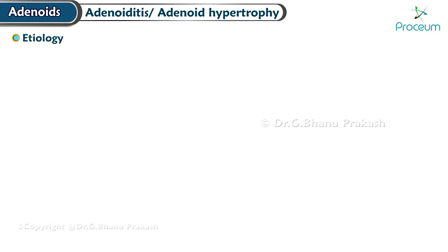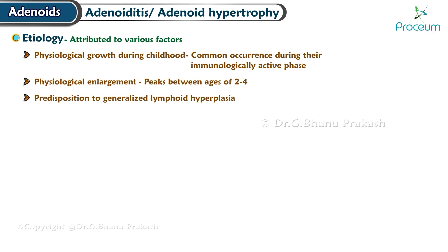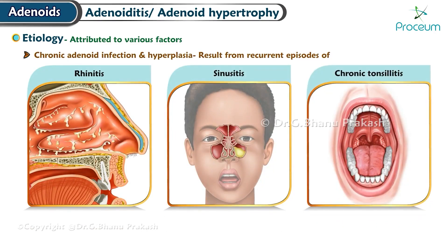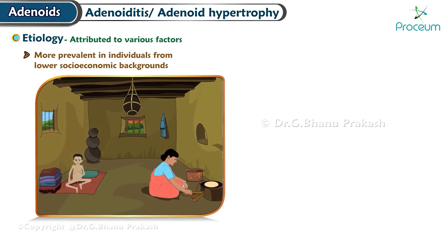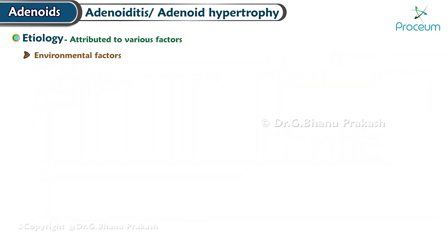Etiology: the etiology of adenoid enlargement can be attributed to various factors. Physiological growth during childhood is a common occurrence during the immunologically active phase; physiological enlargement of adenoids typically peaks between the ages of two and four. Additionally, some children may have a predisposition to generalized lymphoid hyperplasia in which the adenoids are also involved. Chronic adenoid infection and hyperplasia can result from recurrent episodes of rhinitis, sinusitis, or chronic tonsillitis. Adenoid hypertrophy is more prevalent in individuals from lower socioeconomic backgrounds.